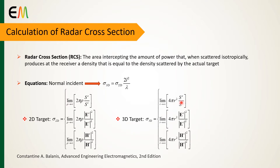In these equations, S is defined as power density, and the superscripts I and S are related to incident and scattered fields and power densities. For normal incidence, the two-dimensional and three-dimensional RCS for a target of length L are related by this equation.